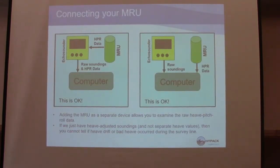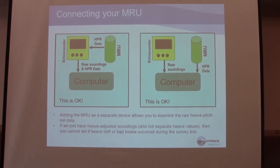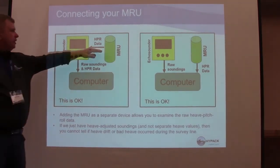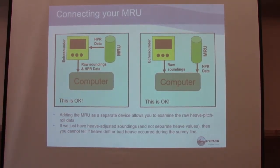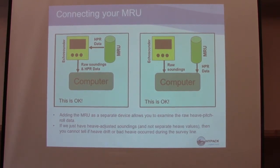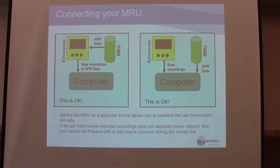Correcting your MRU data: if you bring your MRU data into the echo sounder, some echo sounders will actually send us MRU-corrected depth — they've applied the motion to the depth. We prefer that the MRU data come into HiPAC instead. If the sonar corrects for the MRU and you had an offset wrong, you can't fix it — MRU corrected depth is MRU corrected depth. But if you bring it into HiPAC, we put it all together using the same formulas — fifth-grade trigonometry — and you can adjust your offsets after the fact.